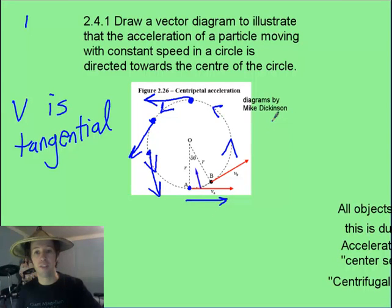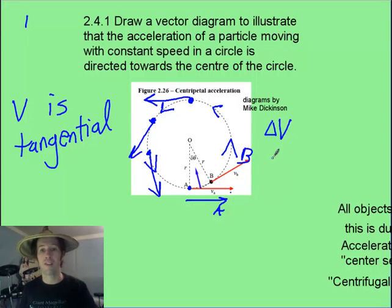Those velocity vectors are always being bent in towards the center of the circle. So if we're asked to draw a vector diagram for the change in velocity as we go from vector A here to vector B here, take a minute and pause it and see if you can draw that vector.